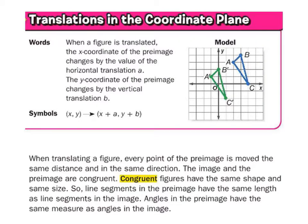For translation in the coordinate plane, what matters are the points, not the lines. A translation gives us a congruent figure — the angles are the same and the side lengths are the same. The only thing changing is the position. In this example, point A translates to A-prime, moving it down and to the left.